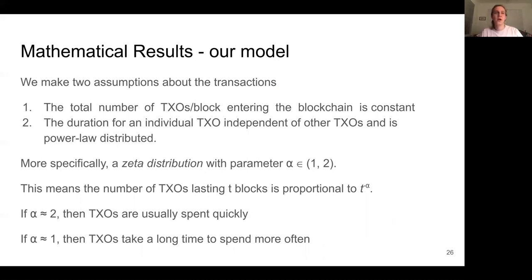More specifically, we assume that the power law distribution is a zeta distribution with parameter alpha. This just means that the number of transactions lasting t blocks is proportional to t to the power minus alpha, where alpha is a tunable parameter that tells us how quickly transactions are spent.